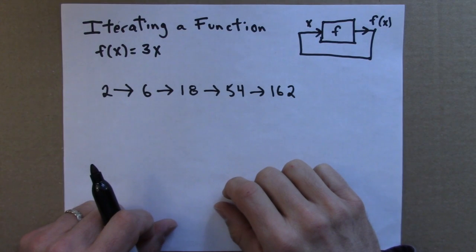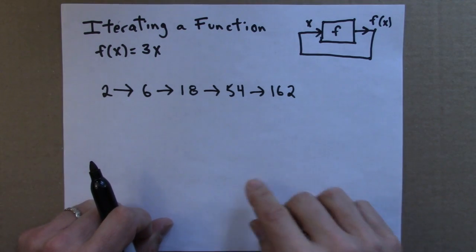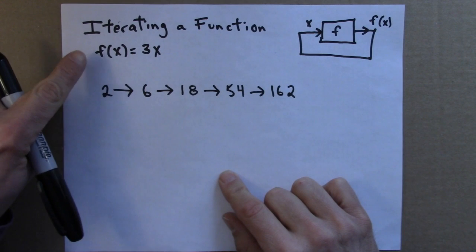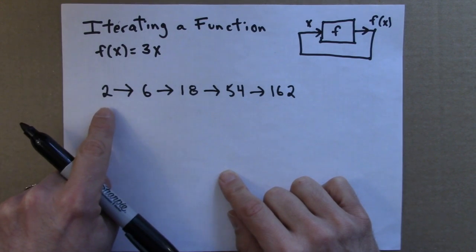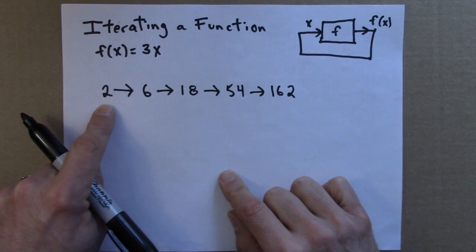In order to work with iterating functions, we'll need to develop some vocabulary and some terminology. So again, let's consider the tripling function, f(x) = 3x, and here is the result of iterating the number 2.